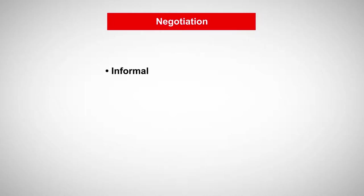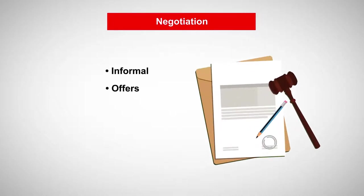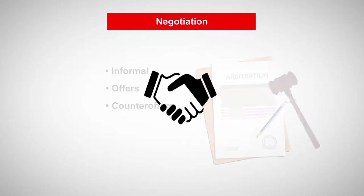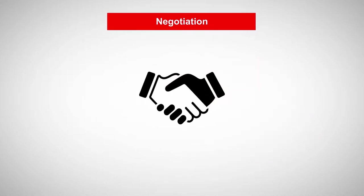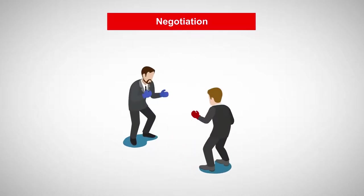First, we'll begin with negotiation. A negotiation is generally informal and involves a series of offers and counteroffers between the parties until they reach an agreement to resolve their dispute. It is by definition a voluntary process, and it may or may not ultimately resolve the dispute.